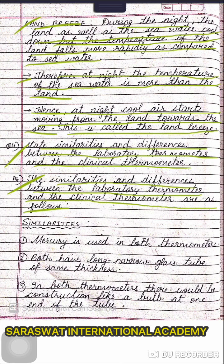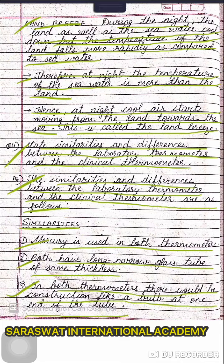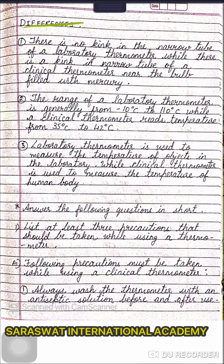Question number 4: state similarities and differences between the laboratory thermometer and the clinical thermometer. Similarities: mercury is used in both thermometers. Both have a long narrow glass tube of the same thickness. In both thermometers, there is a construction like a bulb at one end of the tube.